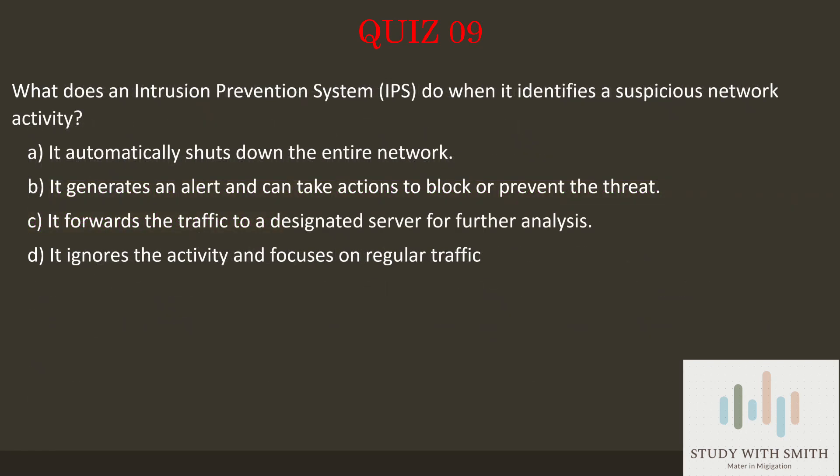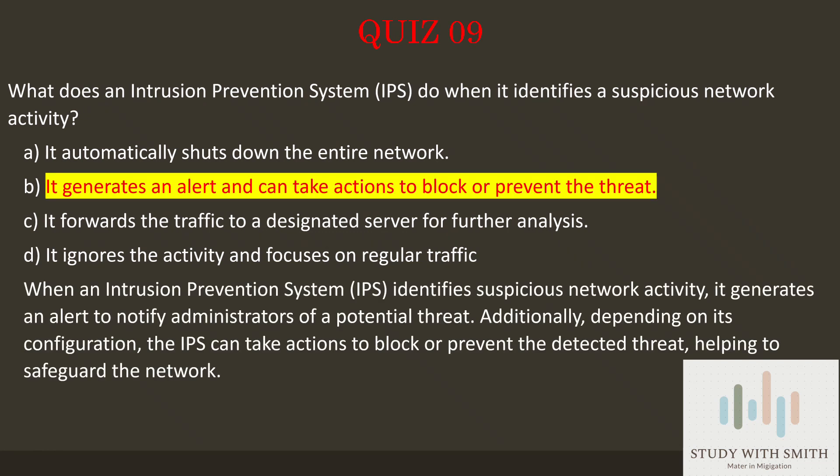Let's go to question 9. What does an Intrusion Prevention System, IPS, do when it identifies suspicious network activity? Pause the video now to select the best answer. The answer is B: it generates an alert and can take actions to block or prevent the threat.